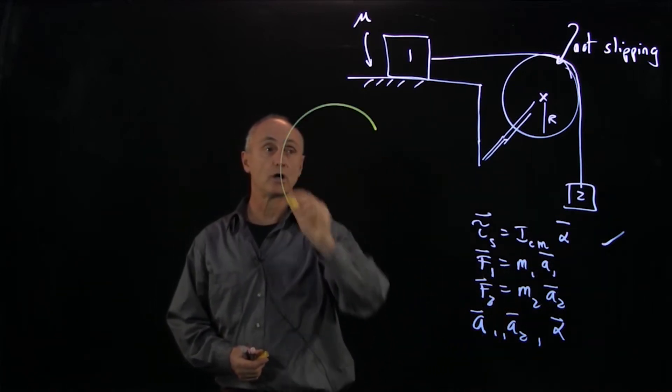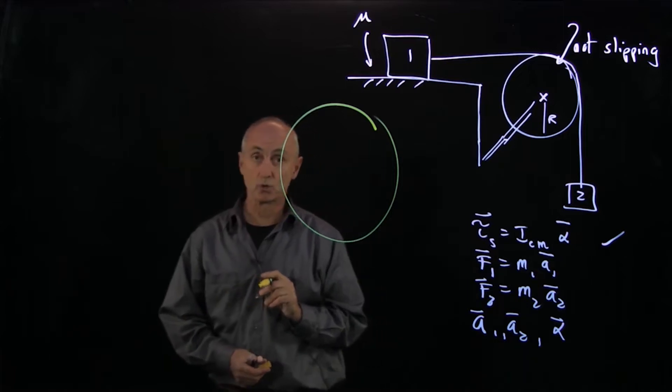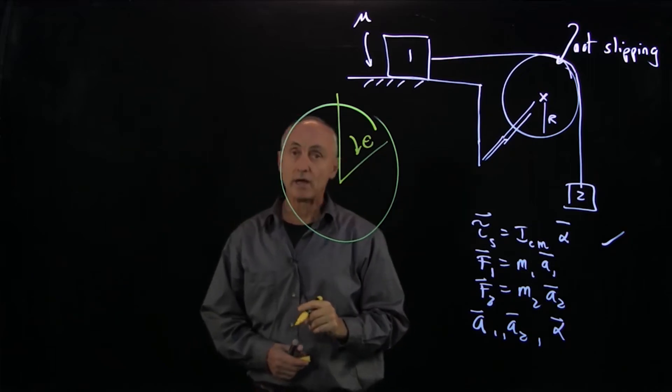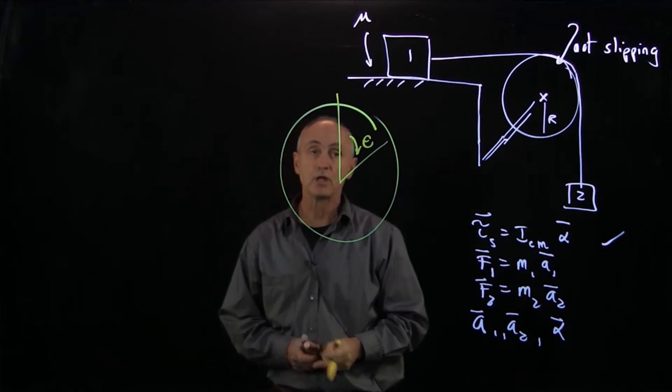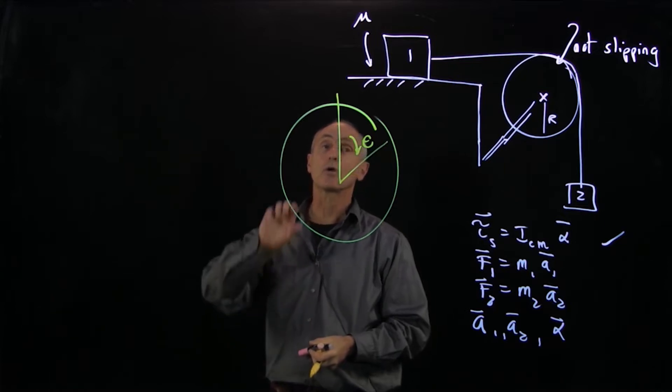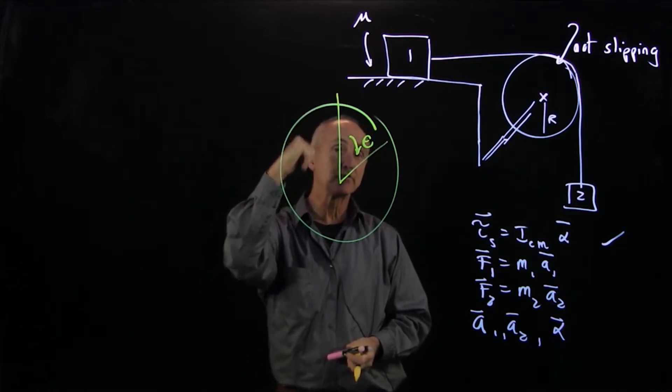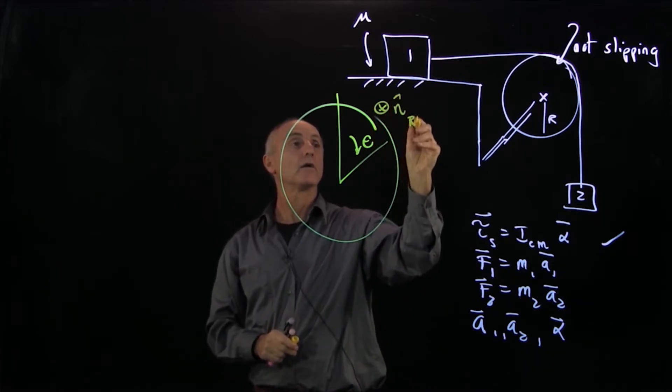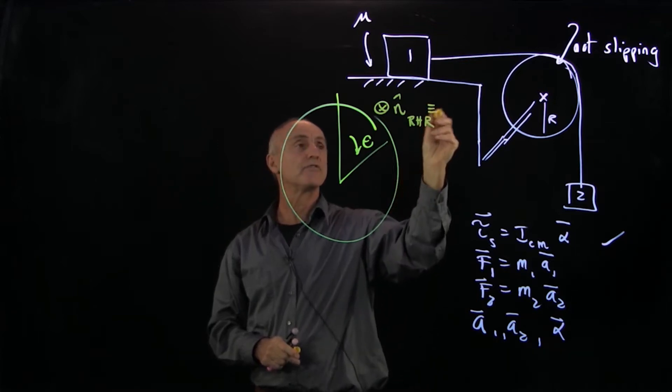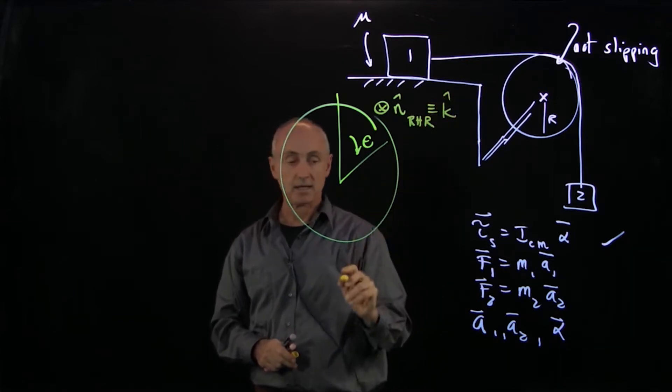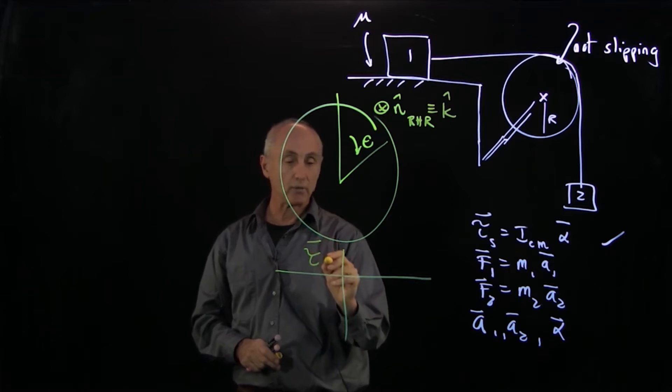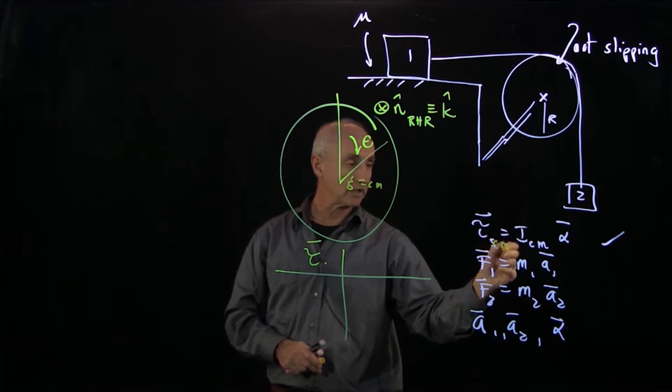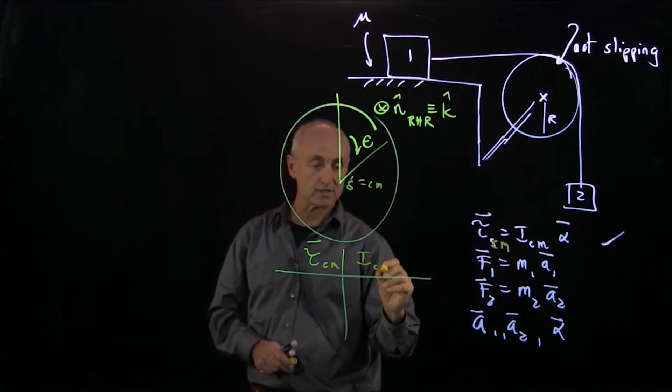So what I'd like to do is draw a coordinate system, a rotational coordinate system. I'll draw an angle theta, and I have to draw a right-hand rule. My angle theta will look as though it's going into the plane of the figure, so I write cross n hat right-hand rule, and I'm going to define that to be k hat. When I write my point S here will be CM, so I'm going to calculate this about the center of mass, and I get ICM alpha.